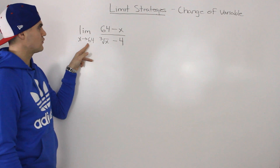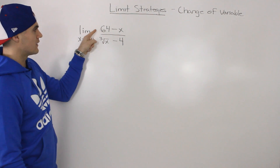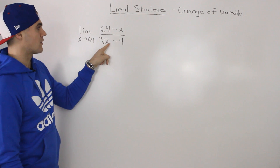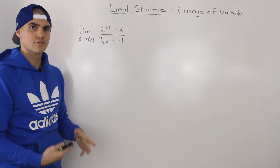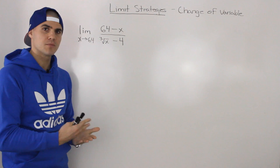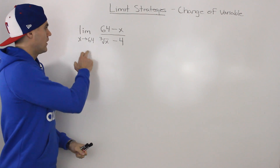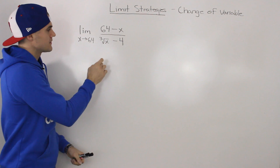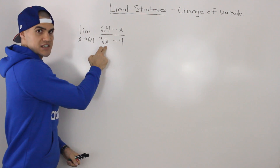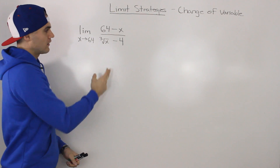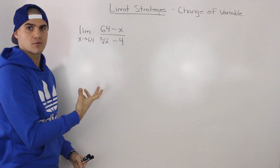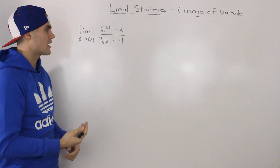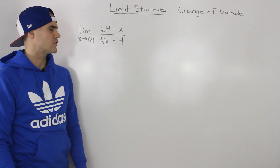Let's look at this particular example: the limit as X approaches 64 of (64 minus X) all over the third root of X minus 4. The first thing you always check is whether you can make a direct substitution. If we substitute 64 for X, the third root of 64 is 4, and 4 minus 4 gives 0 in the denominator — so direct substitution is undefined.